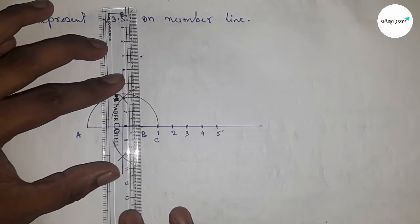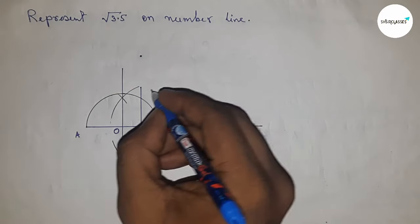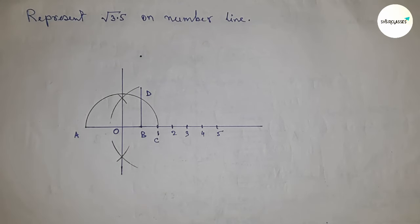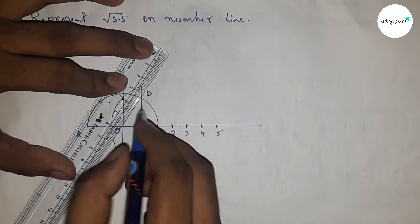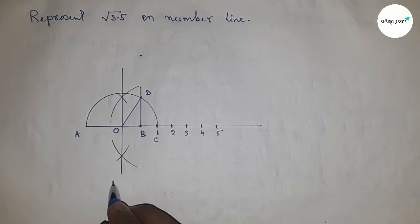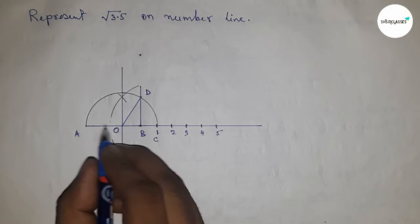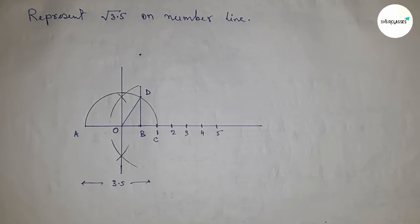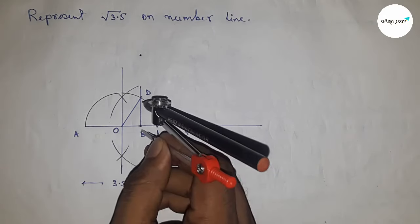This cuts the semicircle at point D. Next, join the center O and D to get the radius OD. So we got the radius OD, and the length between A and B is 3.5 centimeters.